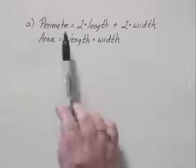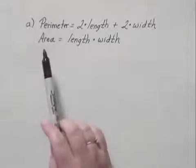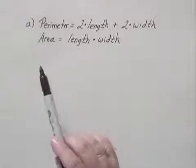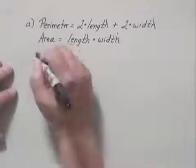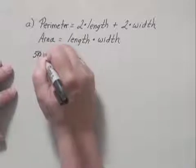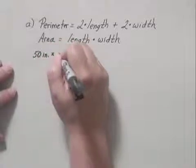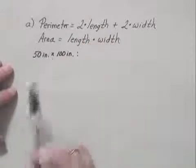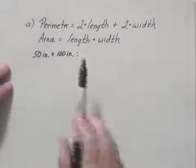Now we need to use each of these formulas three times because we need to find the perimeter and the area of all three tables. So we'll start with the 50 inch by 100 inch table. And this symbol here means by in this abbreviation.